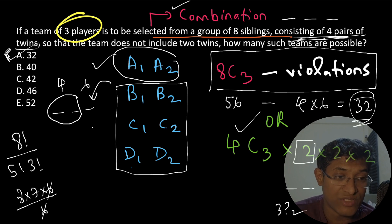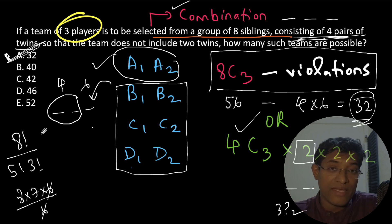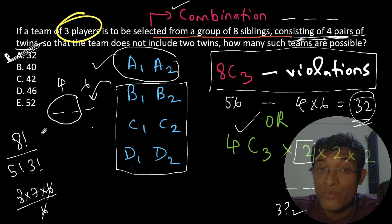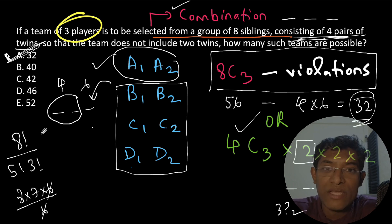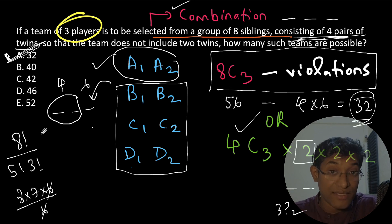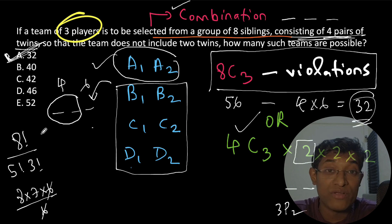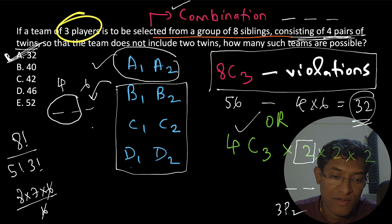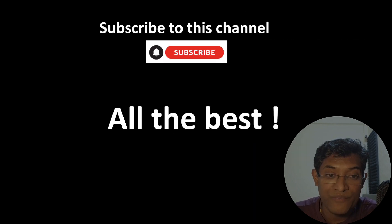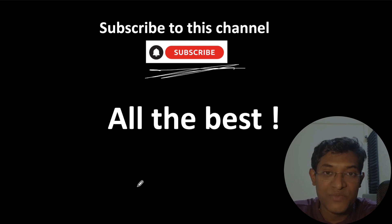Quickly revising what we learned in this video: combination is synonymous to selection; permutation is synonymous to selection and arrangement; order is important for permutation; order is not important for combination. I hope you've learned something interesting. All the best — do subscribe to this channel, and see you in the next video.